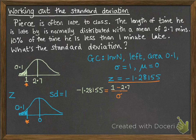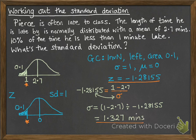Now we're going to rearrange that equation by swapping over that sigma and the -1.28155. And we get the answer like this. So our standard deviation is 1.327 minutes.